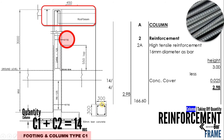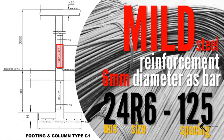Sekarang kita tengok pula mild steel reinforcement 6mm diameter, S bar. Untuk kes ni, kita perlu rujuk kepada detailing untuk link. Dekat sini ada tertulis 24 R6 @ 125. Maksudnya: 24 adalah numbers — bilangan link untuk 1 kolam. R6 adalah saiz mild steel kita. Dan 125 adalah spacing.